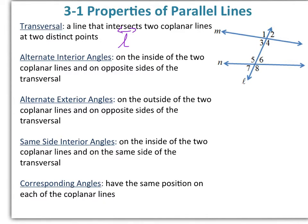Alternate interior angles are on the inside of the two coplanar lines and on opposite sides of the transversal. Referring to our diagram, that would be angle 3 and angle 6 — that's one pair — and then angle 4 and angle 5.